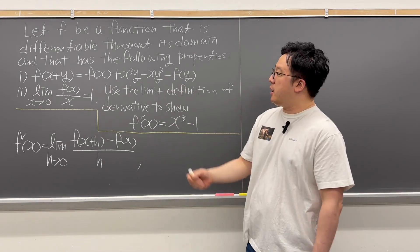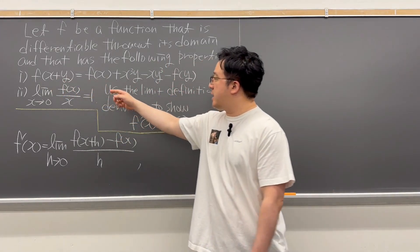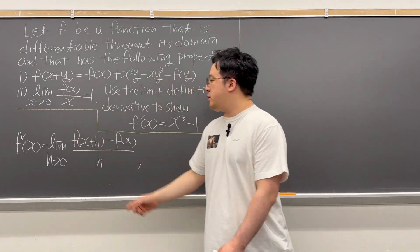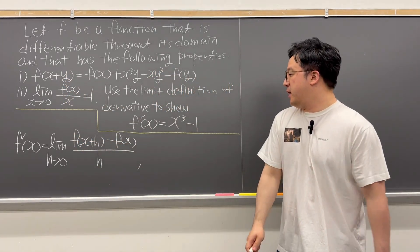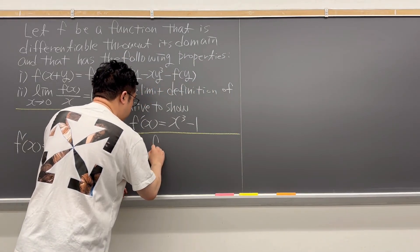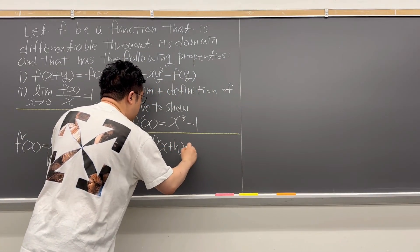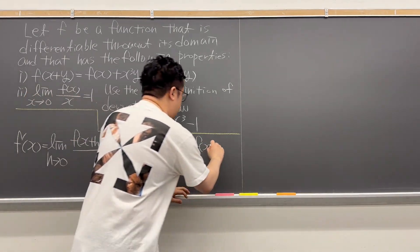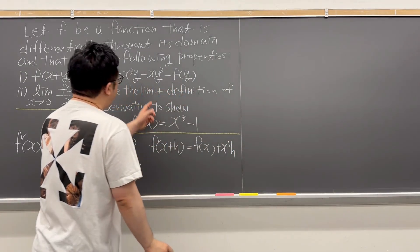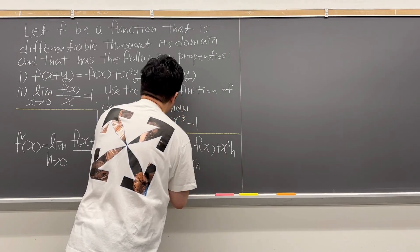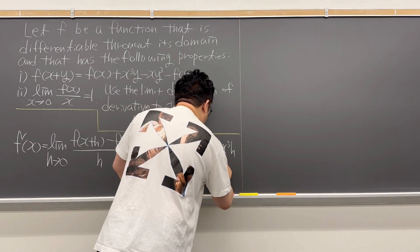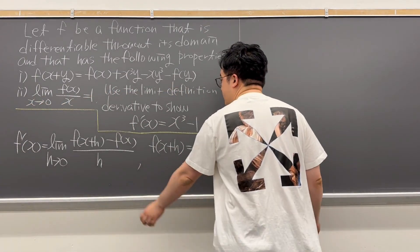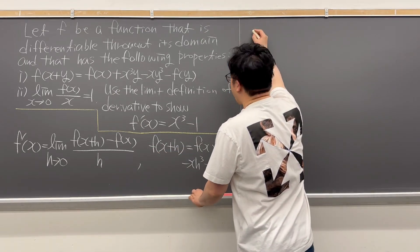The first condition says f of x plus y is f of x plus x cubed y minus x y cubed minus f of y. If you switch this y to h, then f of x plus h becomes f of x plus x cubed h minus x h cubed minus f of h. This is the first term, and the second term is just f of x. So let's rewrite this limit definition of derivative of f of x.